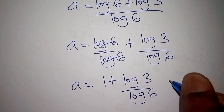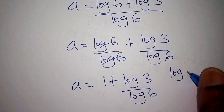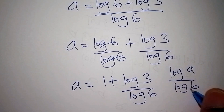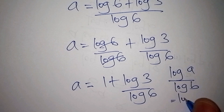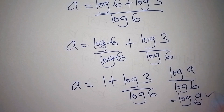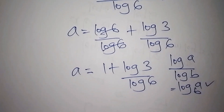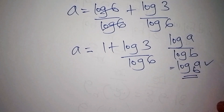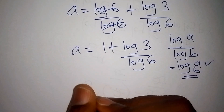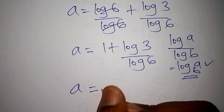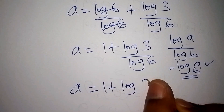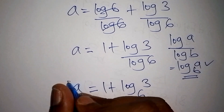Remember that log a over log b can also be written as log of a to the base of b. Using this, the value for a finally is equal to 1 plus the log of 3 to the base of 6.